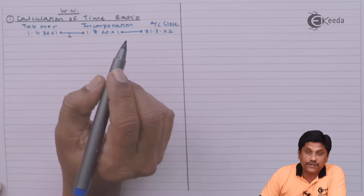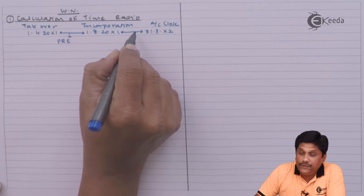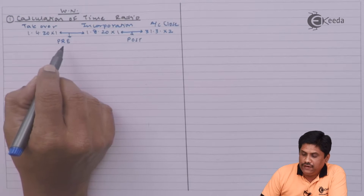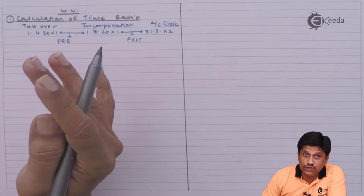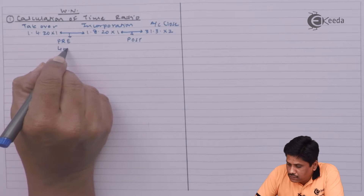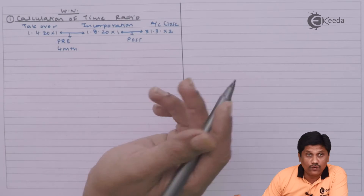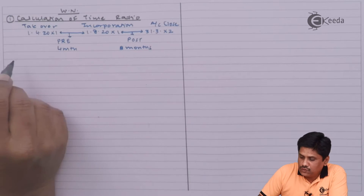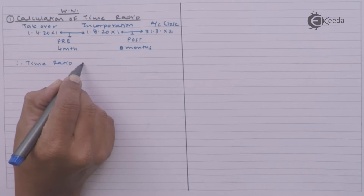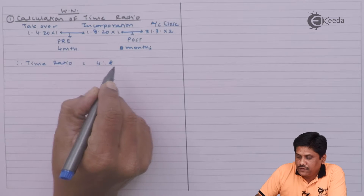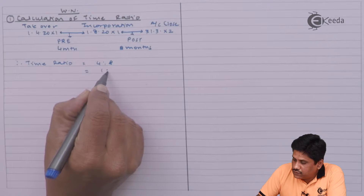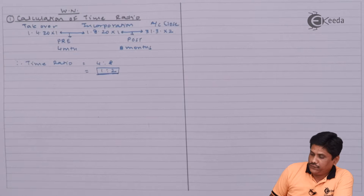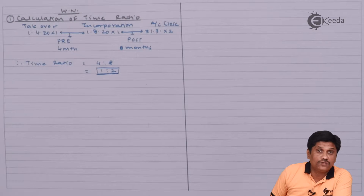The period before incorporation is called the pre-incorporation period, and the period after incorporation is the post-incorporation period. Pre-incorporation covers April, May, June, July — four months. Post-incorporation covers from August onward — eight months. So the time ratio is 4:8, which simplifies to 1:2. To the extent possible, always minimize the ratio so that your calculation is easier.